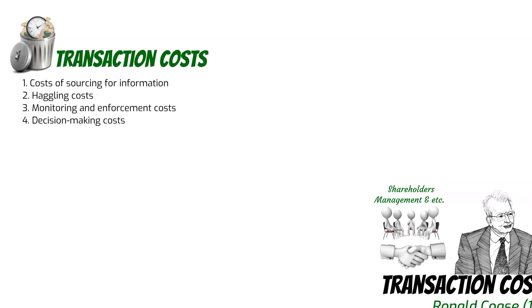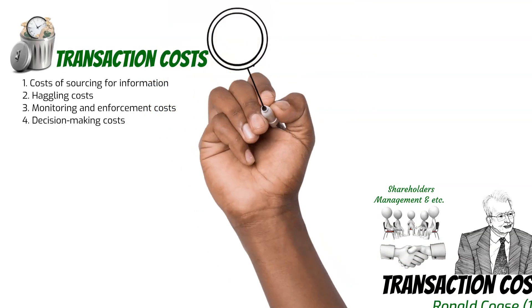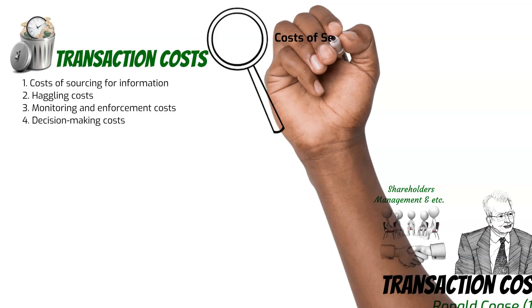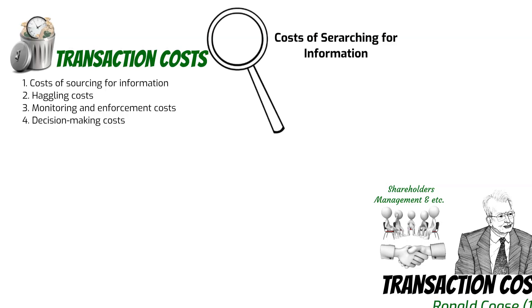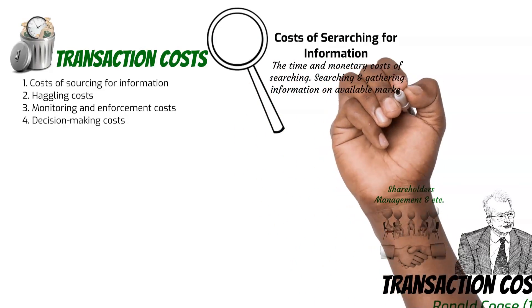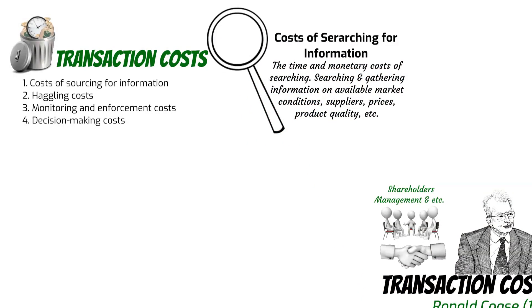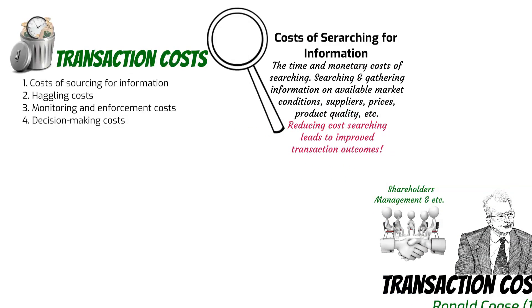Let us explain these different types of costs. The first is the cost of searching for information. This refers to the expenses incurred in gathering relevant information and searching for suitable business partners or potential suppliers of goods and services. In any transaction or business activity, parties need to collect information about market conditions, available suppliers, prices, and product quality. These costs arise from research, data collection, and the time and effort spent finding the best options. Reducing search and information costs can lead to more efficient decision-making and improved transaction outcomes.